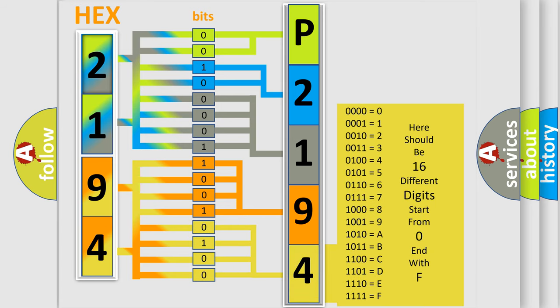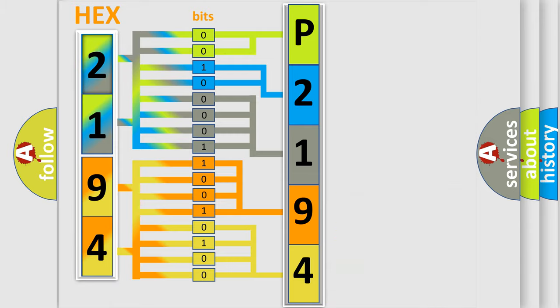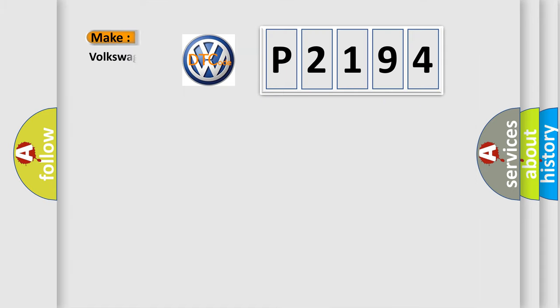We now know in what way the diagnostic tool translates the received information into a more comprehensible format. The number itself does not make sense to us if we cannot assign information about what it actually expresses. So, what does the diagnostic trouble code P2194 interpret specifically for Volkswagen car manufacturers?